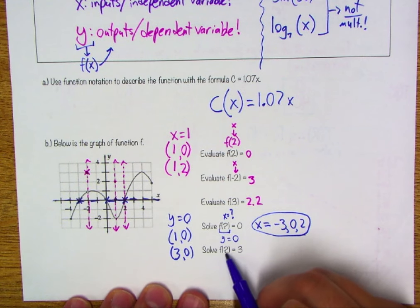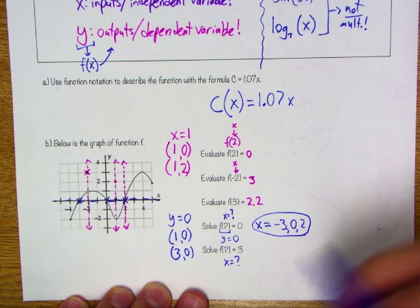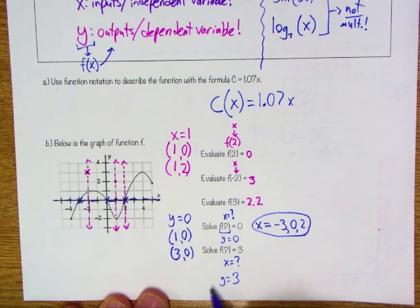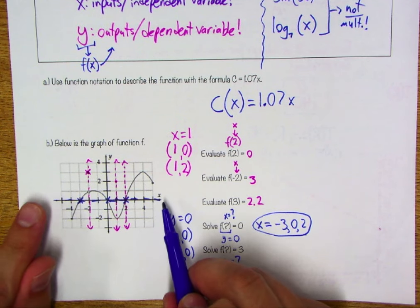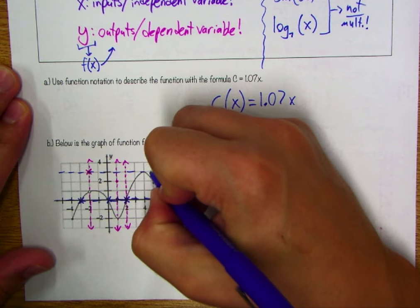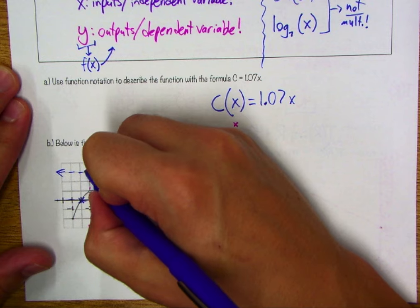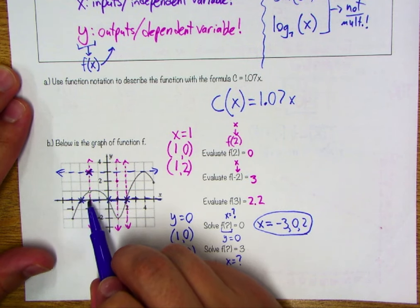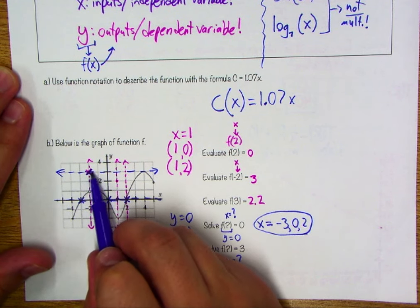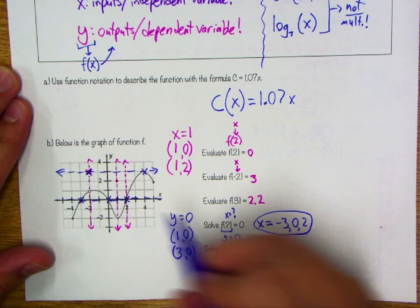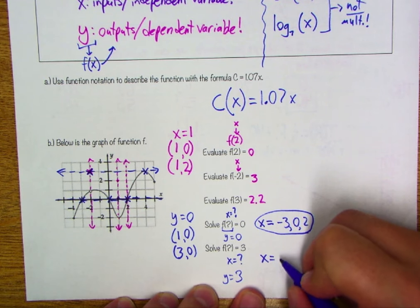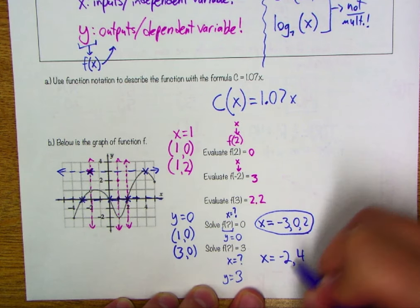Let's try it again: F of what equals 3? So we're looking for the X value where F of x equals 3 — that's a horizontal line up 3 units. We know we crossed at negative 2 earlier — that point is (negative 2, 3). Following that horizontal line across, we also hit at (4, 3). So for what X values is this true? When X is negative 2 and when X is 4.